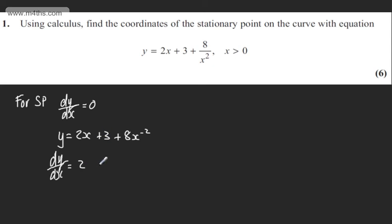Differentiating a constant will give me 0. Then multiplying down by the power and dropping the power by 1, minus 16x to the power of minus 3. I'm going to set this equal to 0 and rewrite it. We're going to have 0 equals 2 minus 16 over x cubed.